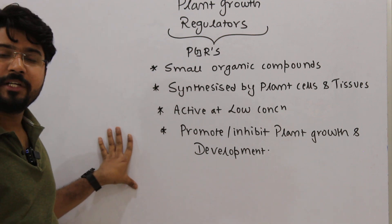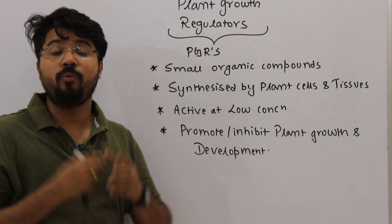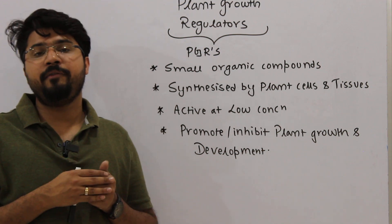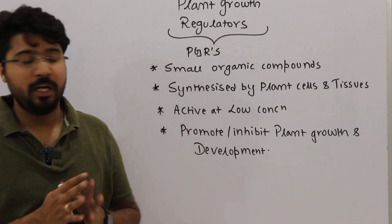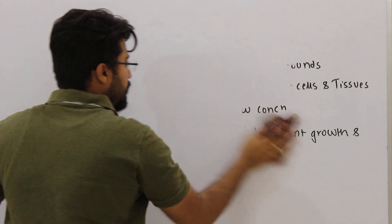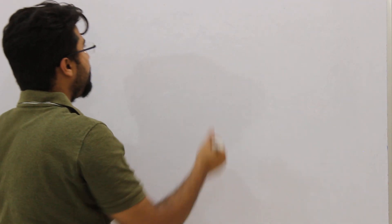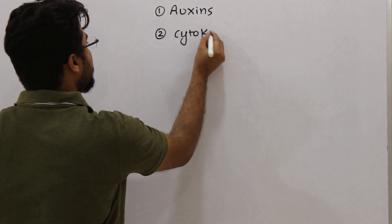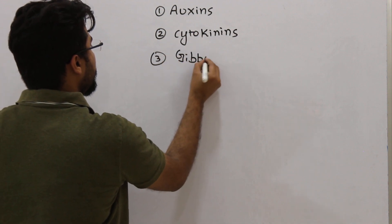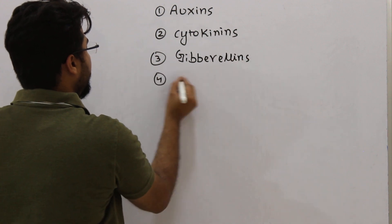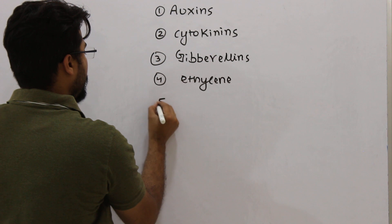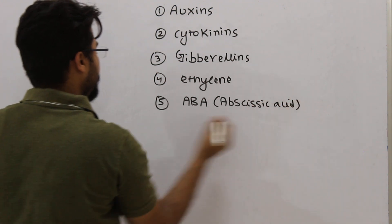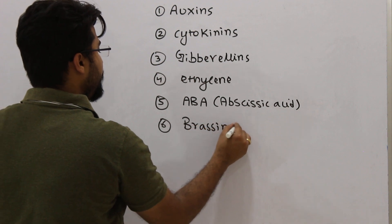Now, regarding the classification of PGRs — what are the major classes? Initially when plant physiology research was started, we had information about six main classes of PGR. Those six classes are: auxins, cytokinins, gibberellins, ethylene, ABA (abscisic acid), and brassinosteroids.